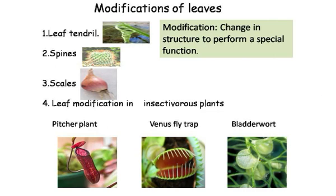We have now completed the modifications and the functions of leaves. I am giving you two assignments. First, explain the three functions of a leaf — you can use diagrams. Second, define modification and explain any three types of leaf modification. Complete these assignments, and next day we will start the topic of the flower.